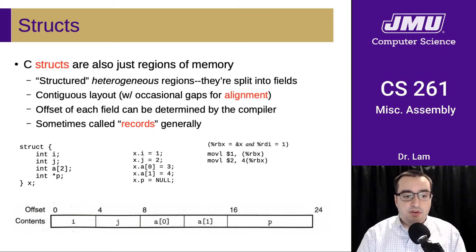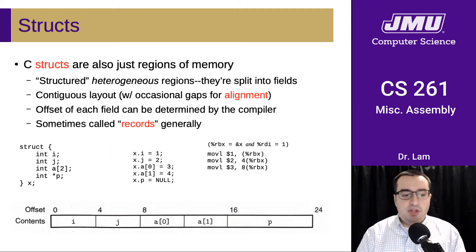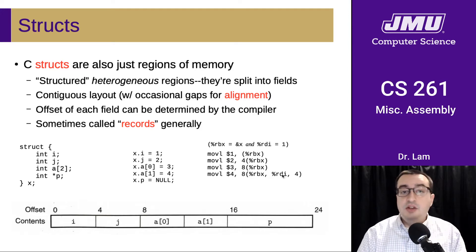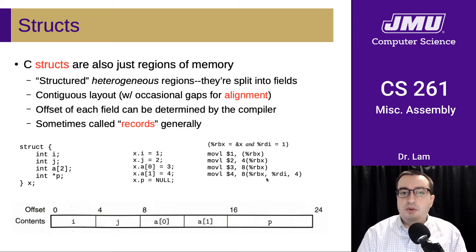Here are some potential answers. We could write to J using an offset of 4 from the base of the struct. Here we're writing to the first element of A, which is at an offset of 8 from the beginning of the struct. We could do the same sort of thing for A[1], but here I've elected to show an example using scaled indexed mode. This has the benefit of working for any index in any array in a struct simply by putting the index of the item you want in a register, RDI for instance, and using that as the index register.